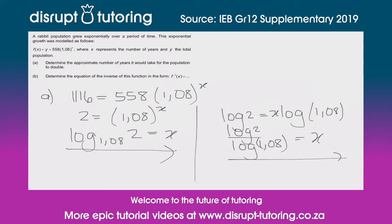We're able to solve x at that step. Plugging it into our calculator, we get that x is approximately equal to 9 years. So it would take 9 years for the population to double.